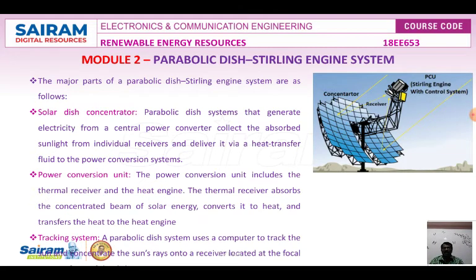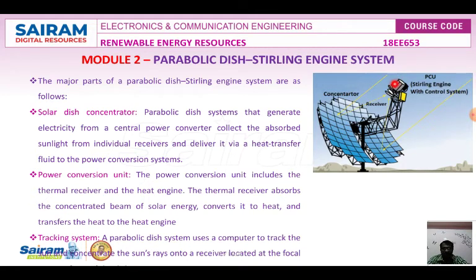The major parts of the parabolic dish Stirling engine are the solar concentrator, power conversion unit, and tracking system. The parabolic dish system generates electricity from the central power converter, which collects absorbed sunlight from the individual receiver and delivers it via heat transfer fluid to the power conversion unit.